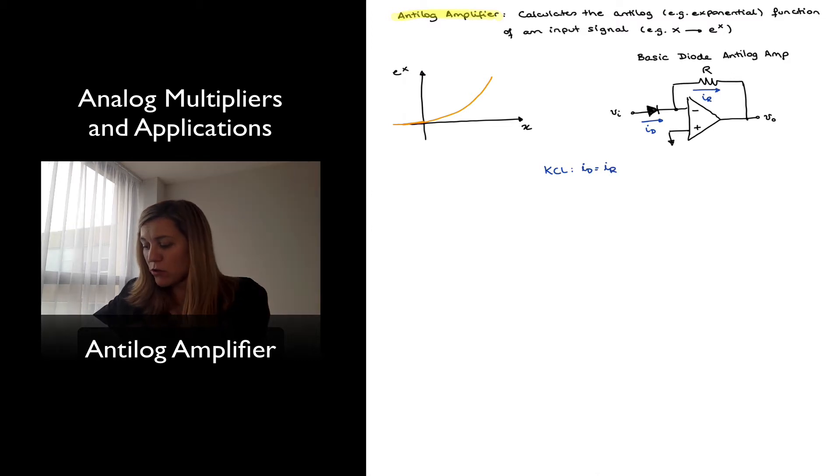We also know from Ohm's law that Vout is going to be equal to negative of the voltage drop across resistor R, which is going to be equal to negative Ir times R.